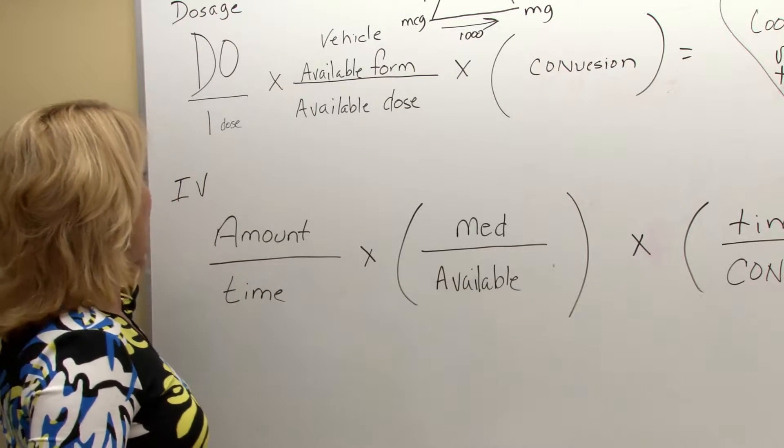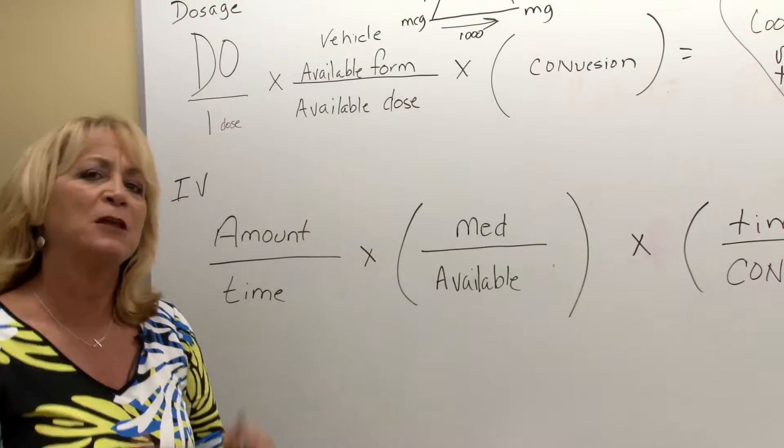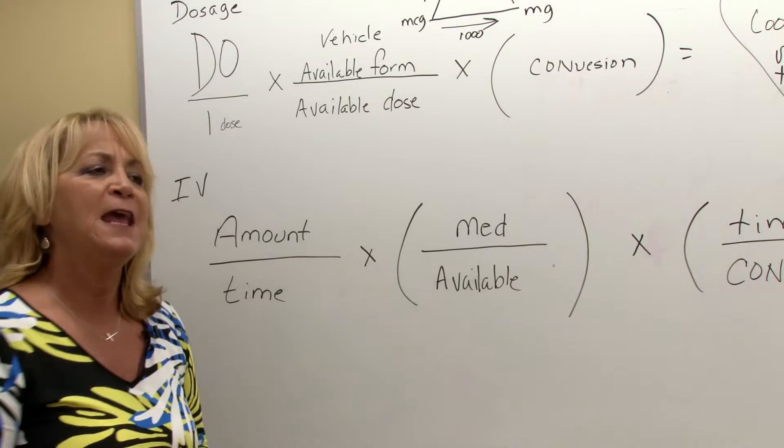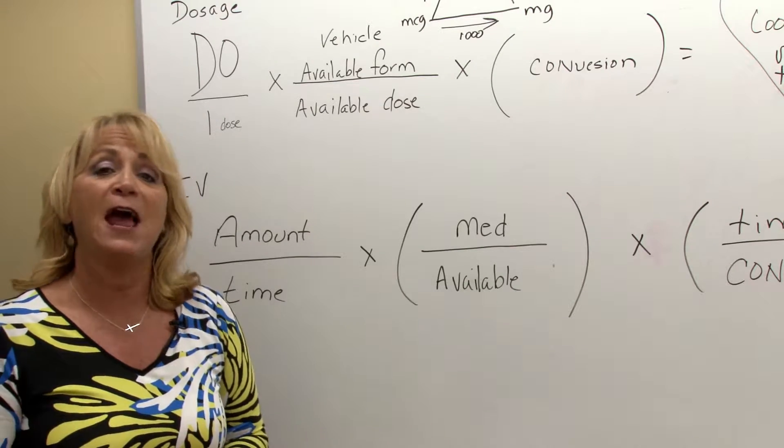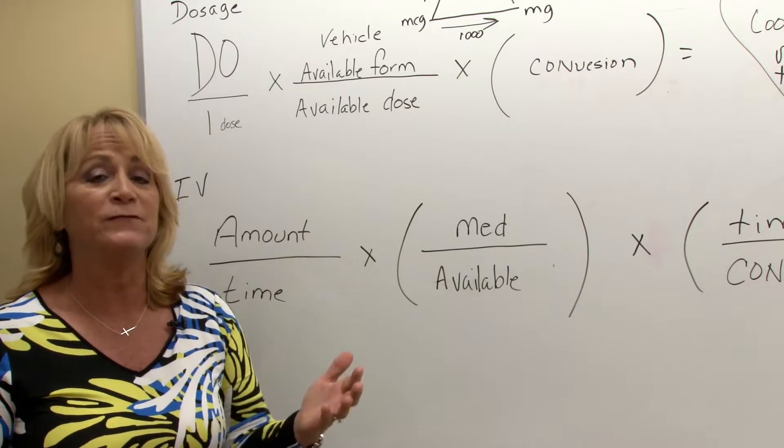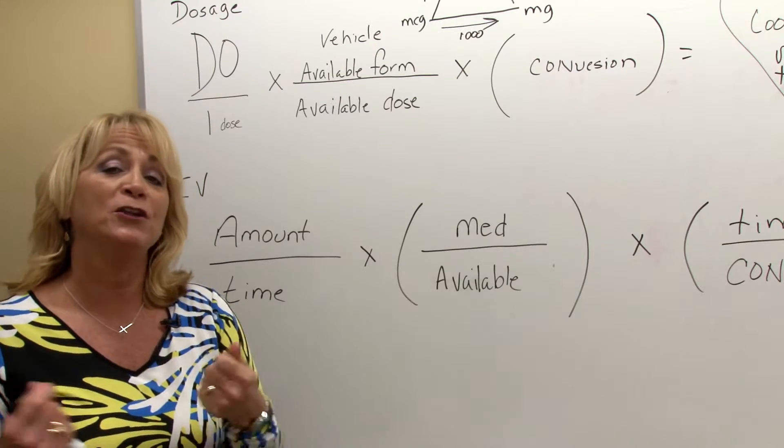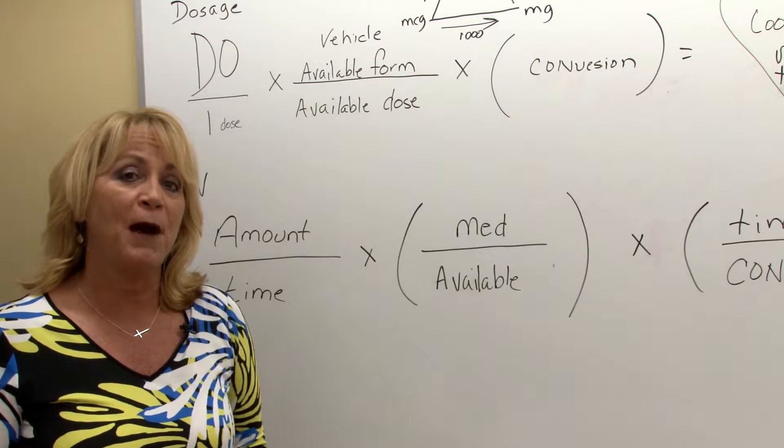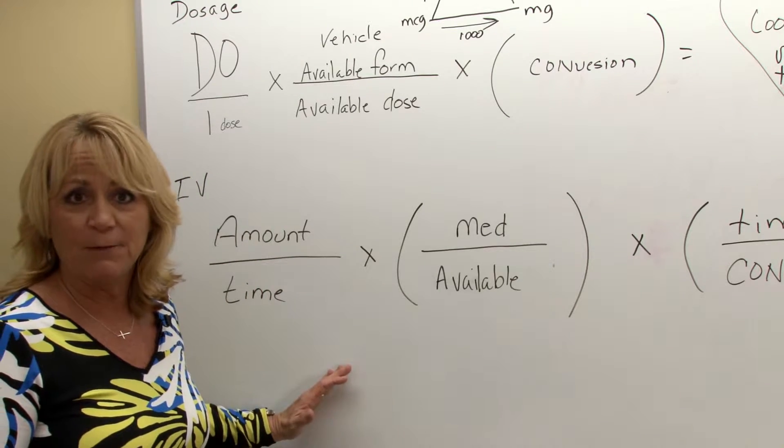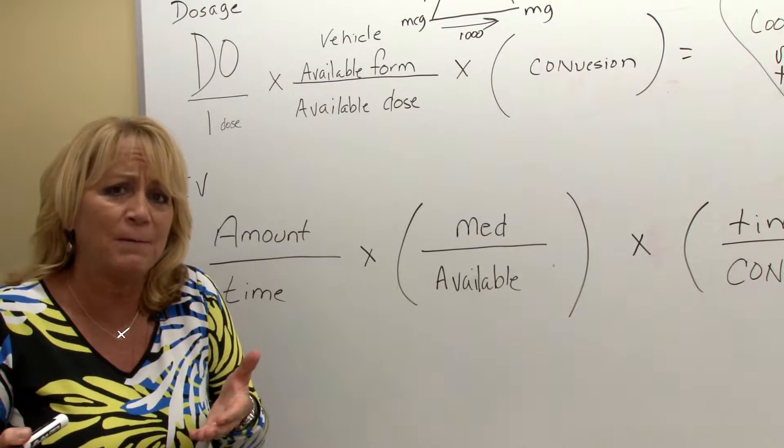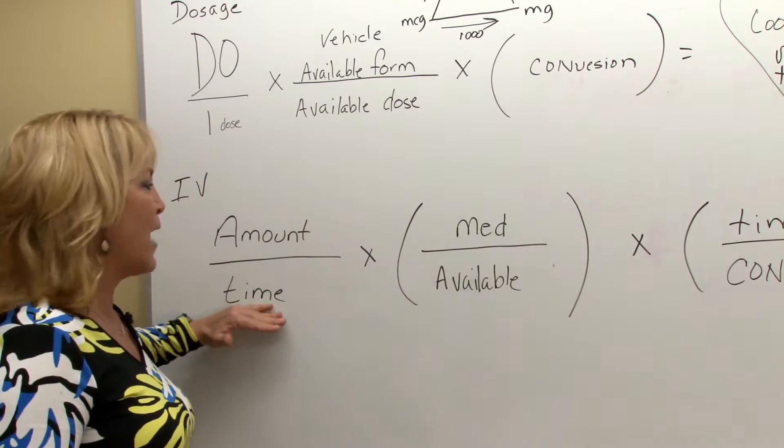The second formula that we're going to talk about has to do with volume over time. It doesn't matter what's in the volume. It matters that there's a volume. For the doctor orders a thousand milliliters of D5 and a half normal saline with 40 milliequivalents of KCL to infuse over eight hours and we want to know how you would set the pump in mils per hour, then this is obviously a volume over time. And it doesn't matter what the volume is. It doesn't matter what's in it. It matters how much over how much time.